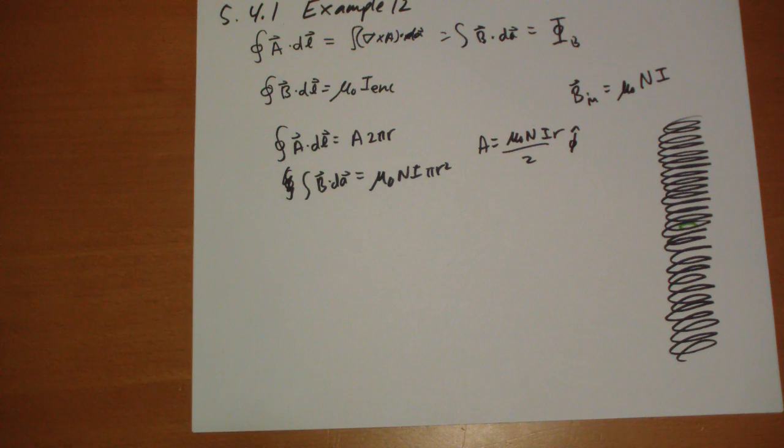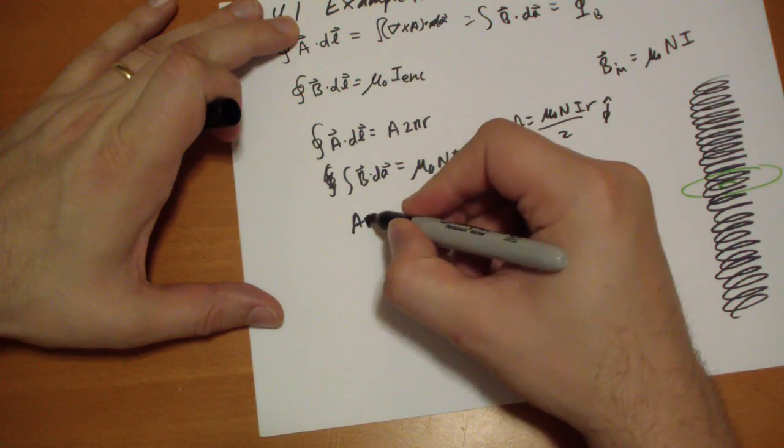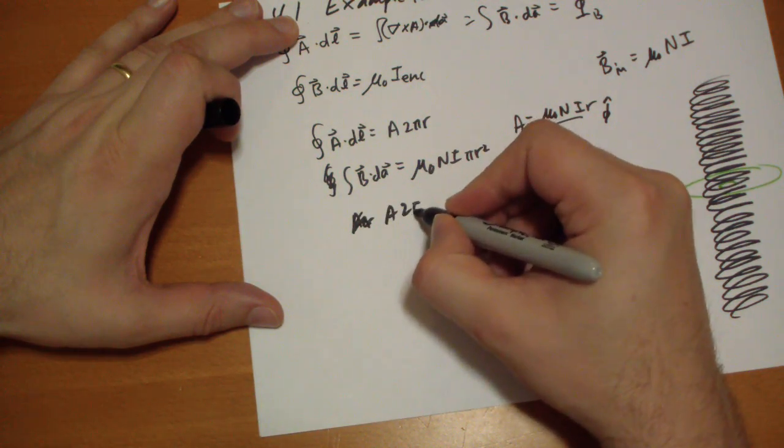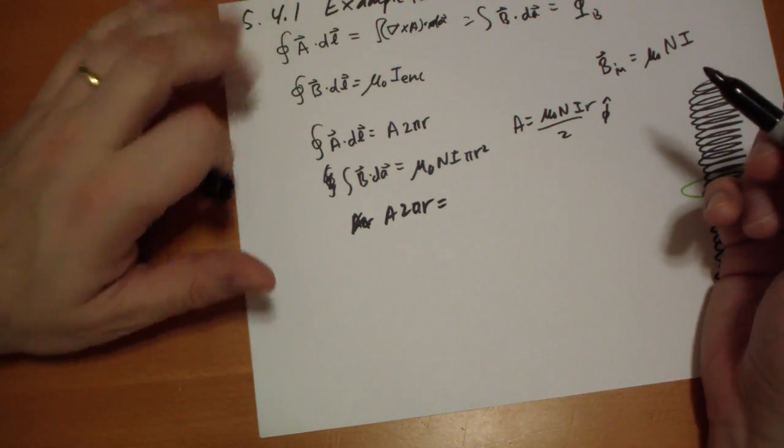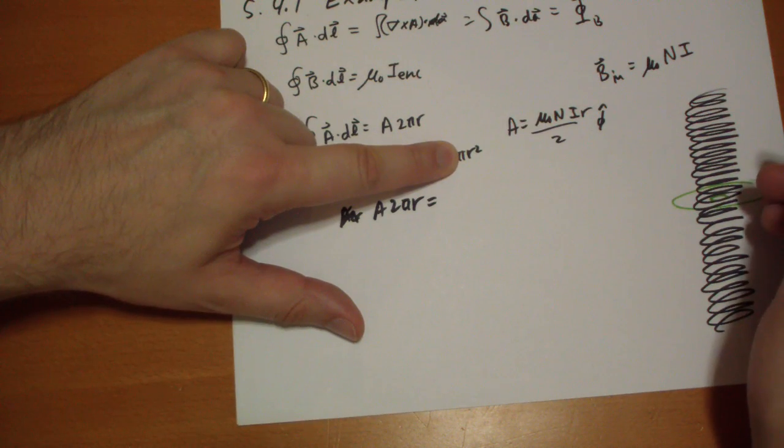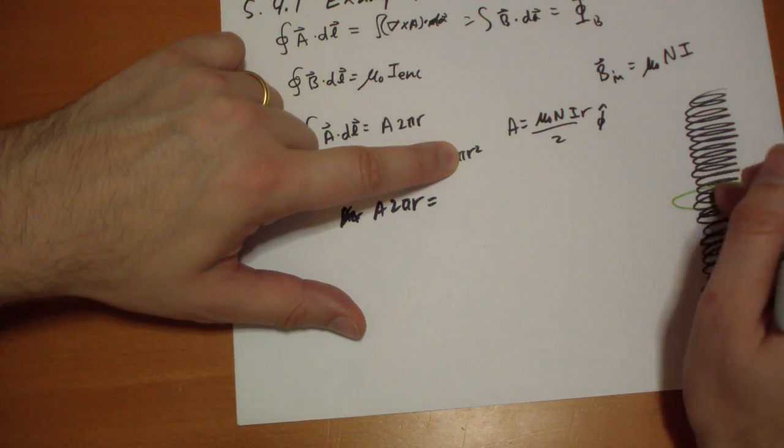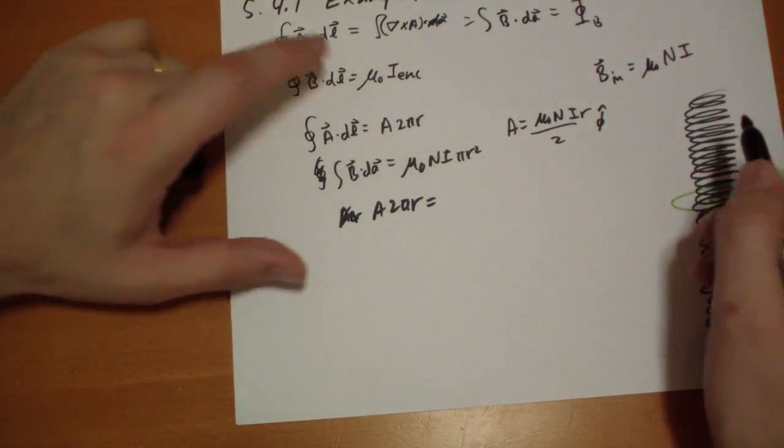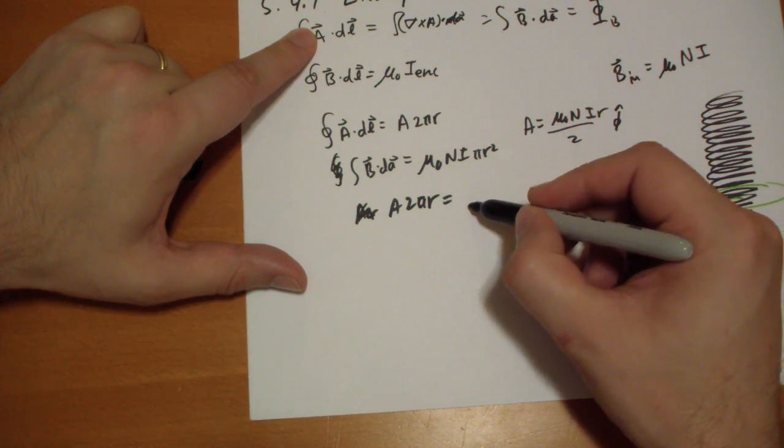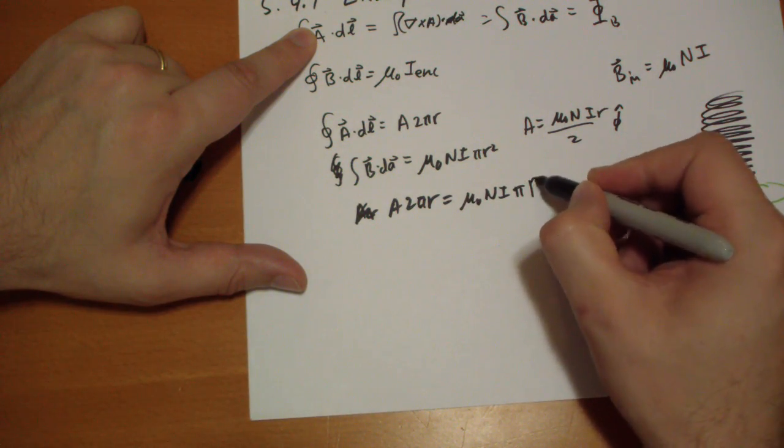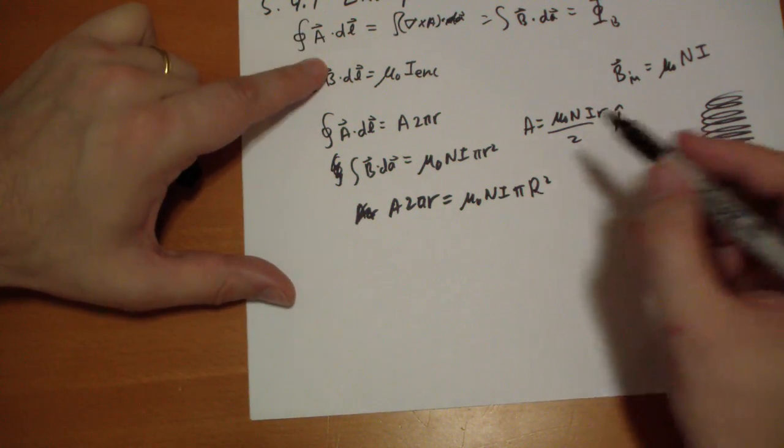Okay, so what about outside? So what if we take a big loop and go outside? Well, same kind of thing. So we get A of 2 pi r is equal to, and this time it's not r squared, because only the stuff on the inside of the solenoid, there's no magnetic field outside. So we get mu naught n i pi, the radius of the solenoid squared.